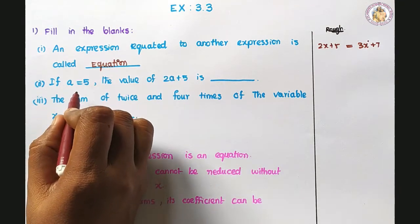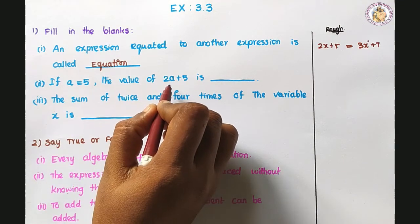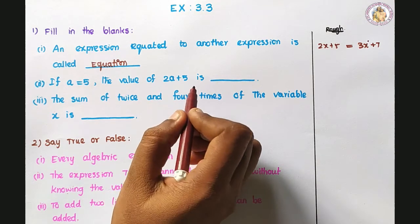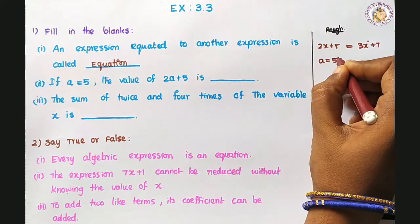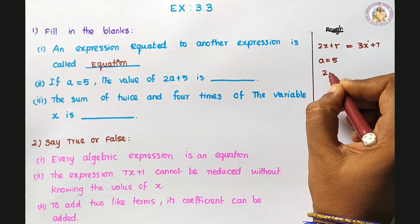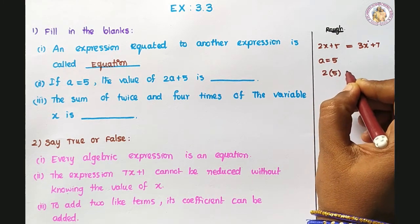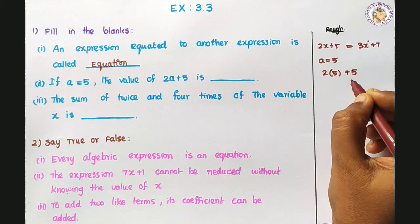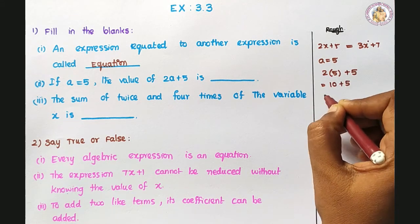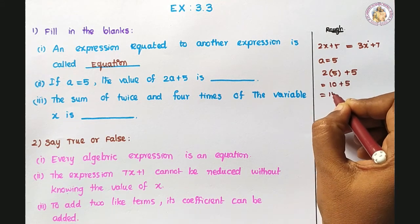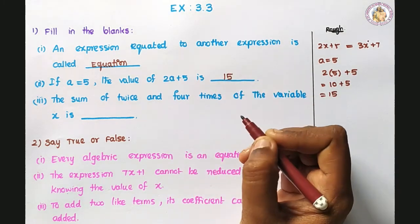If a equals 5, the value of 2a plus 5 is dash. So a equals 5. Now 2a: instead of a, we substitute 5. So 2 times 5 plus 5 — 2 fives are 10, plus 5 — that is equal to 15. So 15 is the answer.